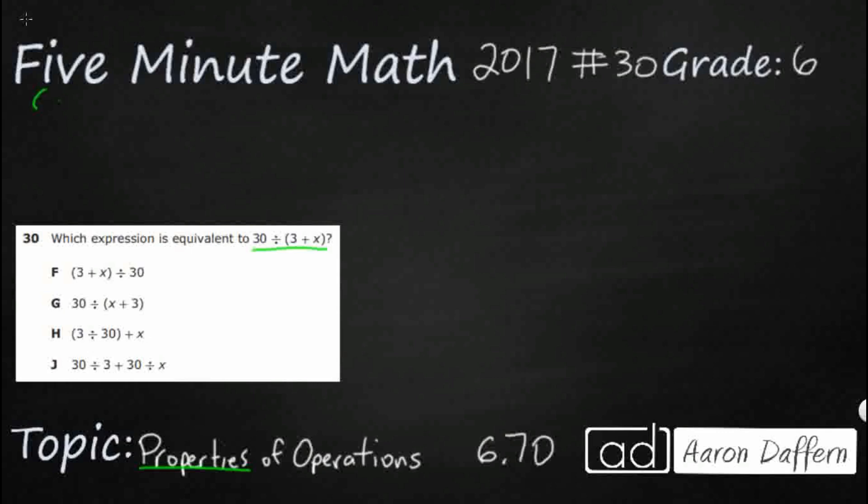So, one property that we might see is the commutative property, and sometimes this is called the order property. And that simply means with either addition or multiplication, it doesn't work with subtraction or division, you can put the numbers in any order that you want to. So, like 3 times y is the same as y times 3, or 5 plus 6 is the same as 6 plus 5.